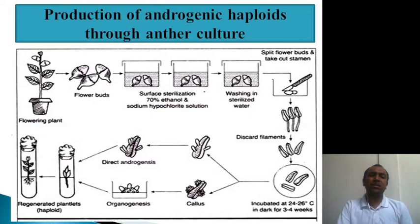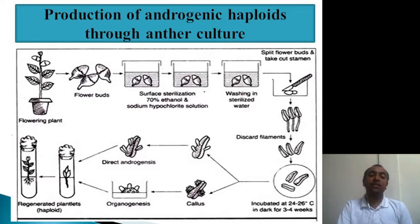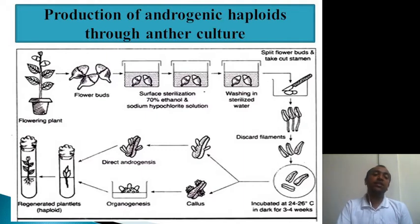The anthers are incubated at 24 ± 2°C in the dark for three to four weeks on MS medium — Murashige and Skoog medium — which is a basal medium for plant tissue culture, though other media may be used depending on the species. There are two possibilities: direct organogenesis, where organs form directly through androgenesis, or the indirect pathway, where a callus — a mass of undifferentiated cells — forms first, and then organs regenerate from it.